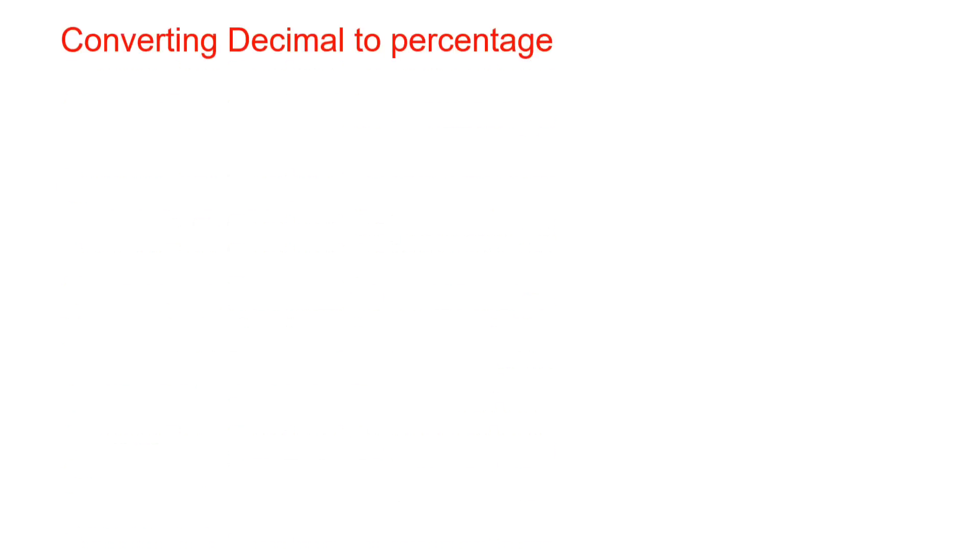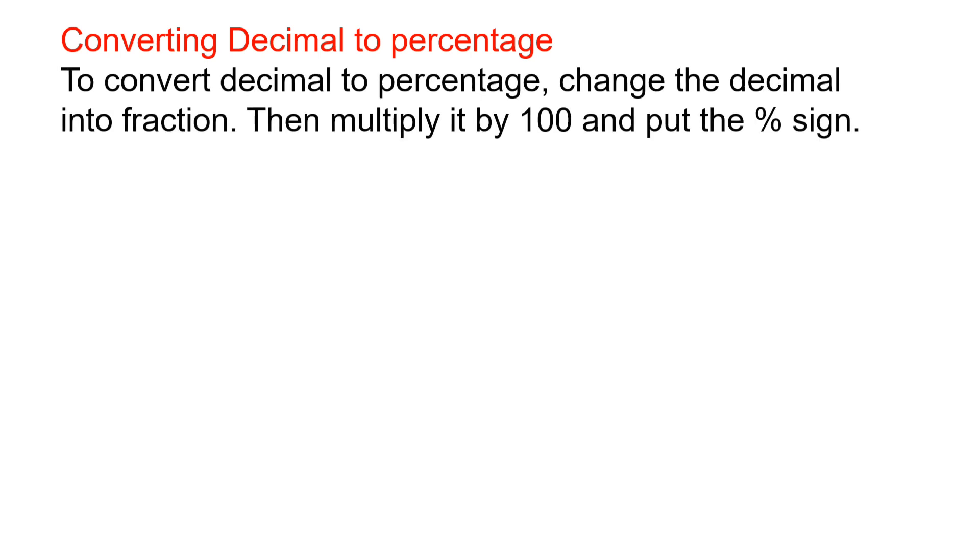Converting decimal to percentage. To convert decimal to percentage, we have to change the decimal into fraction first and then multiply it by 100 and put the percentage sign.